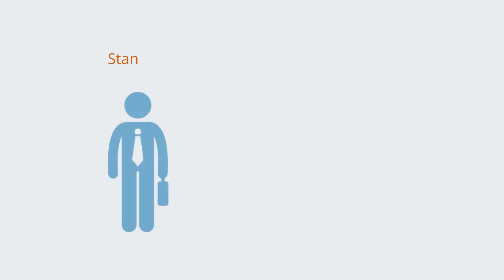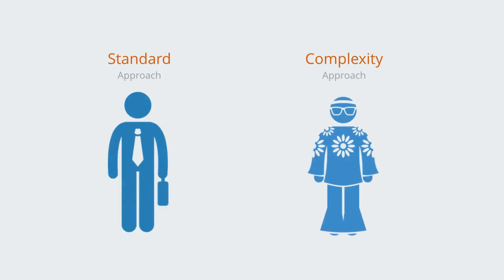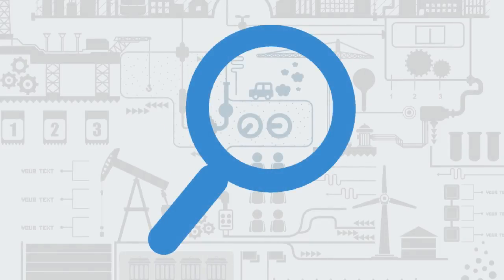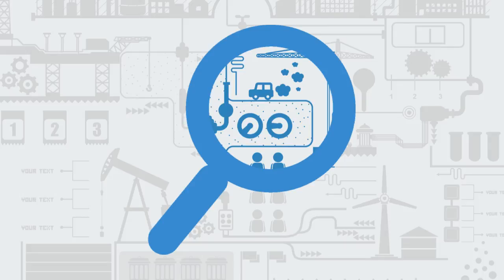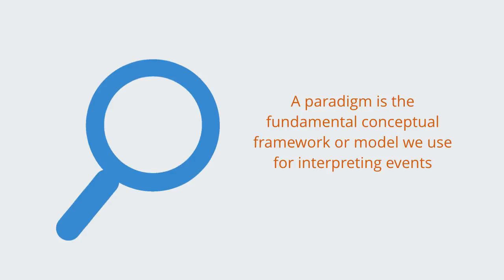As we've previously touched upon, complexity management is an alternative paradigm to our traditional management approach. If we're going to manage something, we're going to have to have some representation or model of how that system works. A paradigm is the fundamental conceptual framework or model we use for interpreting events.